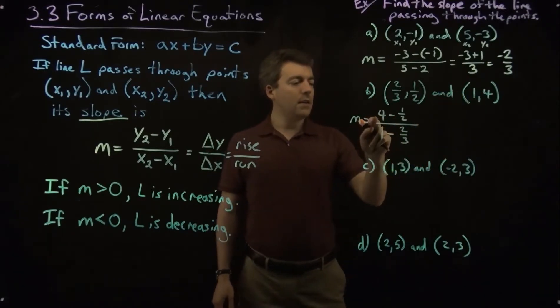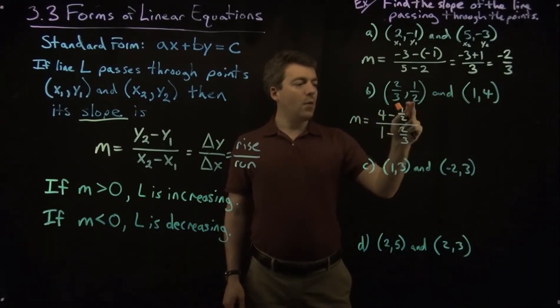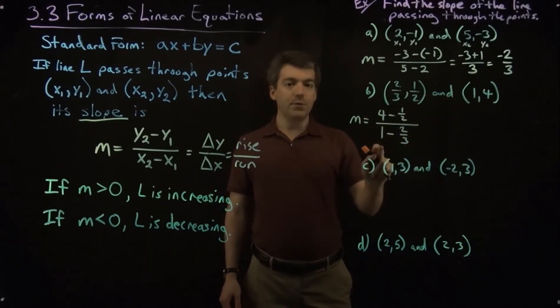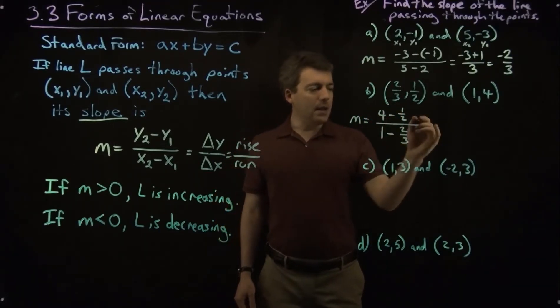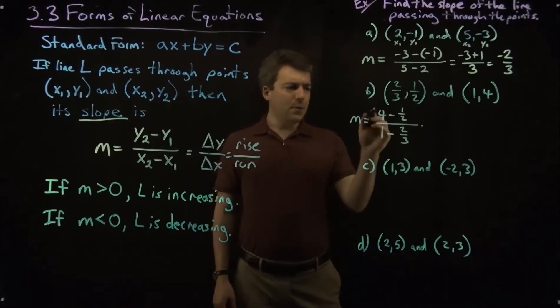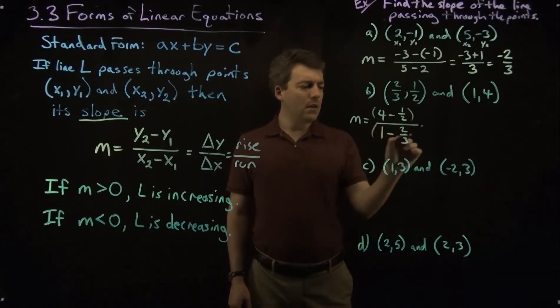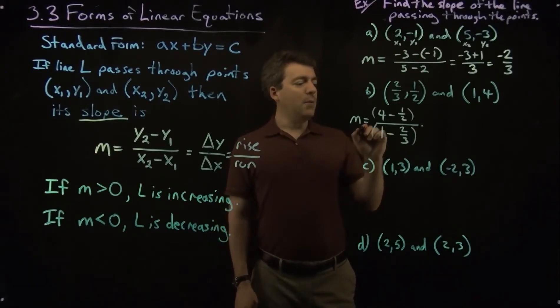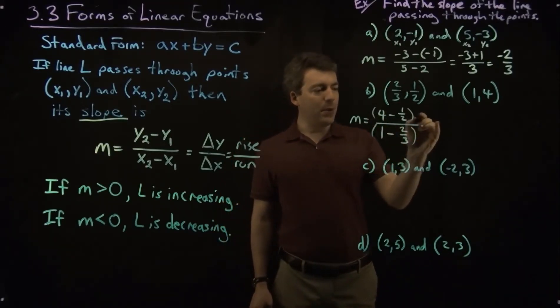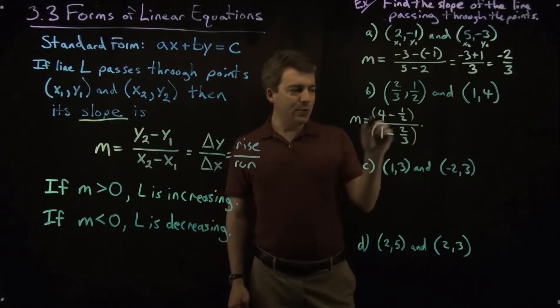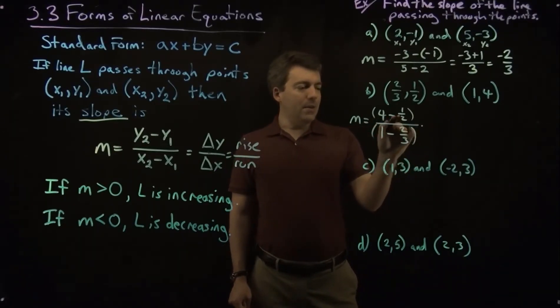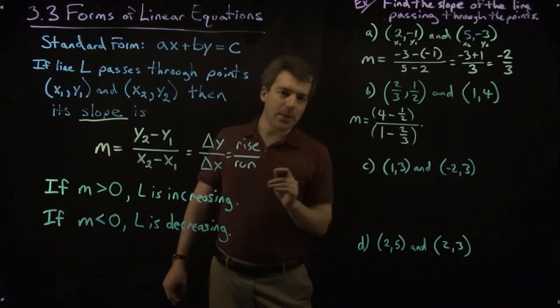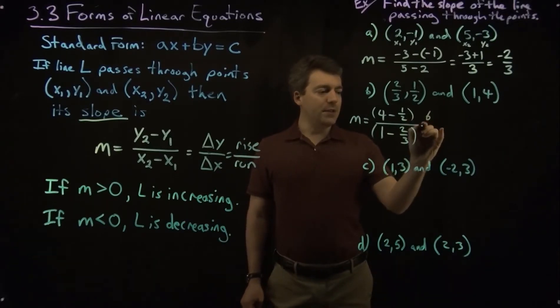All right. So y2, y1, x2, x1. All right. Now, we've got fractions in here, and I don't like to deal with fractions ever. So what I'm going to do is I'm going to multiply both numerator and denominator by something that gets rid of all of the fractions. We've got a denominator of 2 and a denominator of 3. So I know the least common denominator would be 6. So I'm going to multiply by 6 over 6.